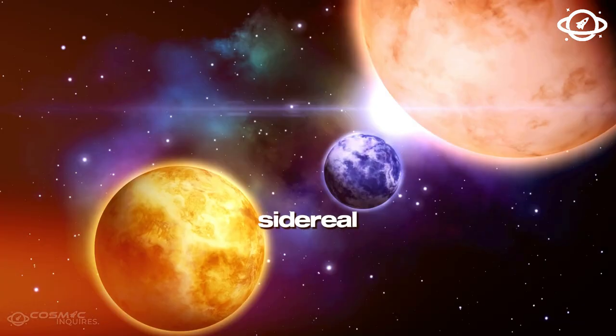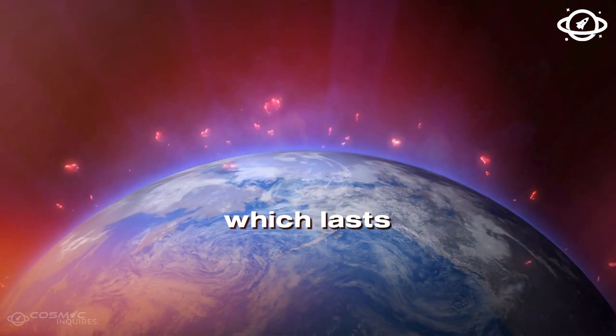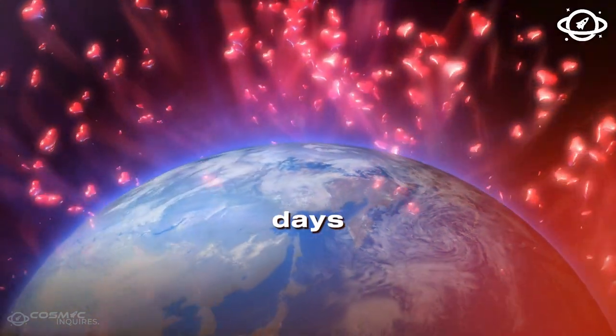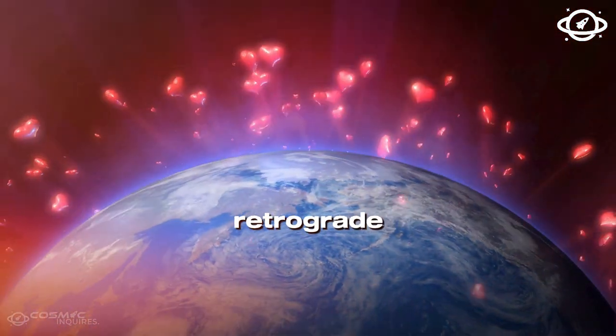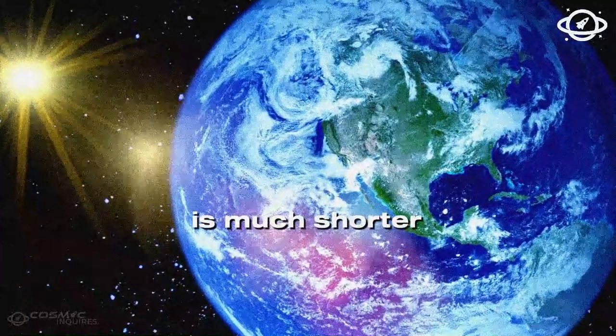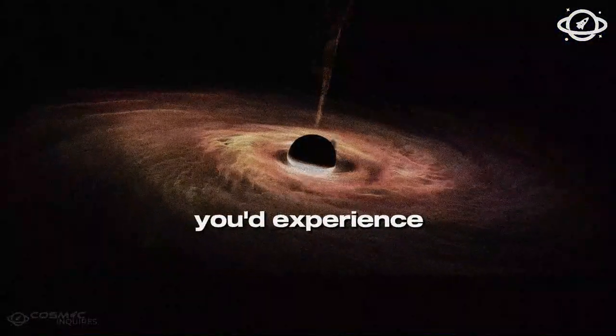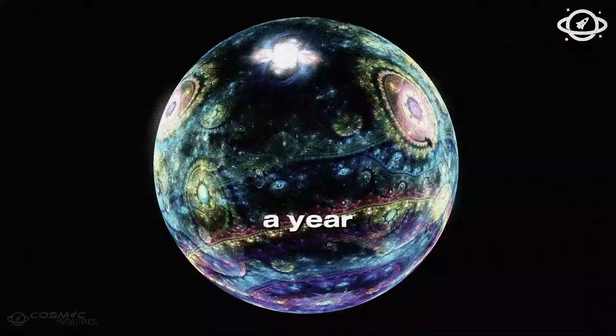In fact, a Venusian sidereal day, one complete rotation, is longer than a Venusian year, which lasts 224 Earth days. However, due to Venus' retrograde rotation, its solar day, from sunrise to sunrise, is much shorter, lasting 117 Earth days. This means you'd experience just under two days in a year on Venus.